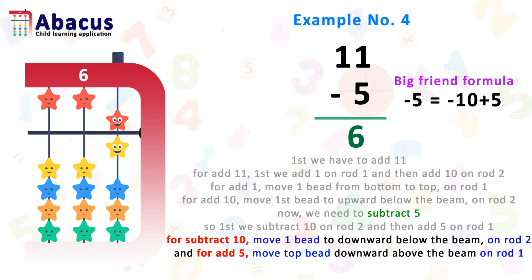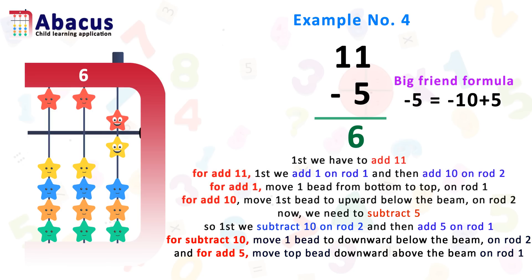It's so easy. Let's summarize: for adding 11 we added 1 on rod 1 and 10 on rod 2. Then for subtracting 5, we used the big friend formula: minus 5 equals minus 10 plus 5.